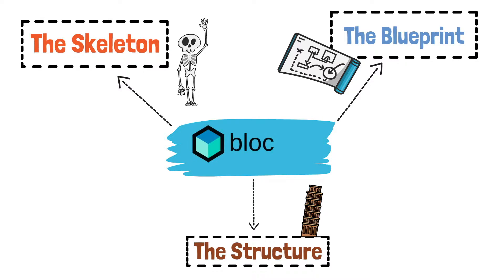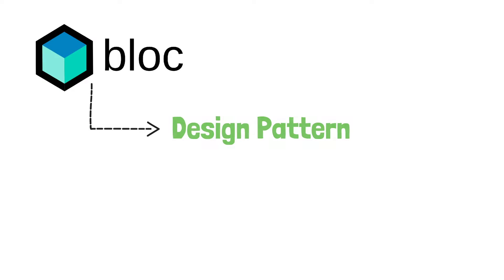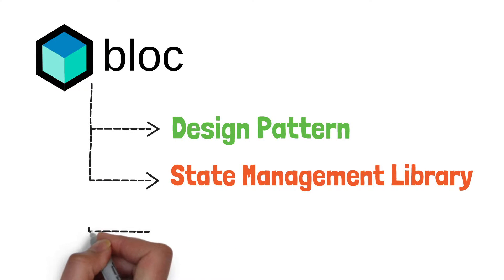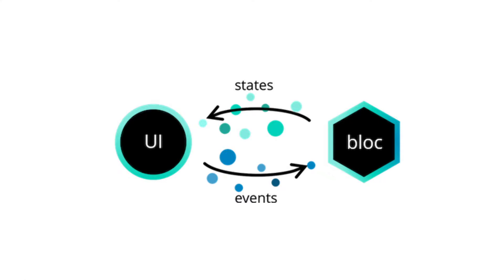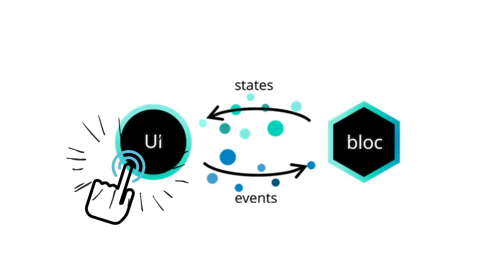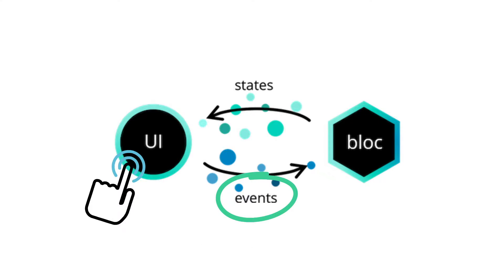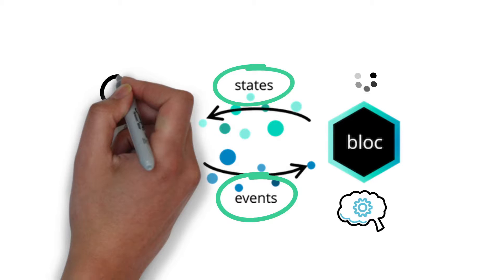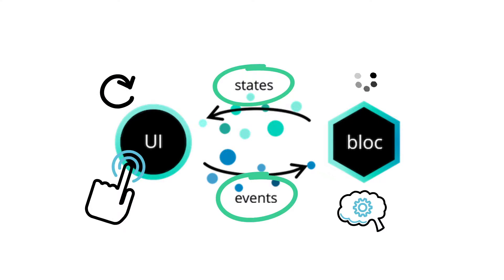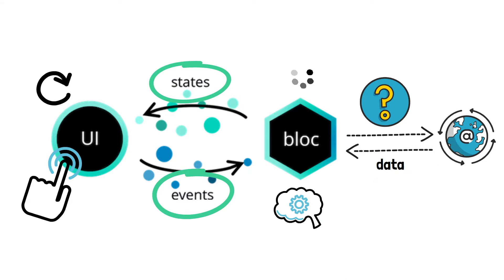Block architecture is simply an architecture which has block as its center of gravity. So not only is block a design pattern and a state management library, but it is also an architectural pattern. What we know for now is that for every interaction a user makes with the app through its UI, there should be an event dispatched to the specialized block or cubit, which will process it and will eventually emit a state that is going to rebuild the UI.